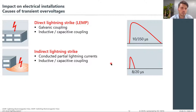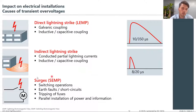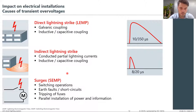Another cause of transient overvoltages is switching operations. This could come from the utility during load shedding, switching off large inductive motors, earth faults or short circuits within the network, tripping of fuses, as well as parallel installation of power and IT systems.